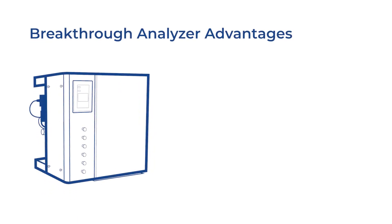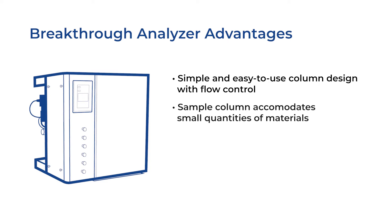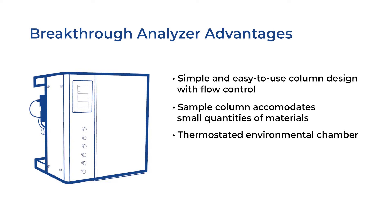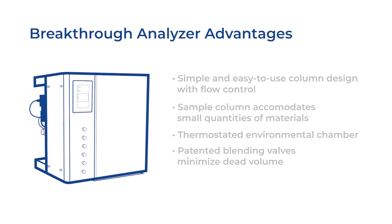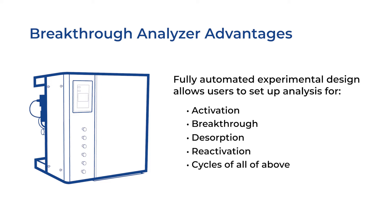This is especially important if your application involves the separation of hexanes or xylenes. The BTA offers several advantages. It has a simple column design with exceptional flow control, which enables multiple gases to be used with highly controlled blending. The sample column accommodates small quantities of material, which is ideal for R&D applications. A thermostated environmental chamber provides constant temperatures and prevents condensation of vapor streams. The patented blending valves provide advantages for gas mixing and minimization of system dead volume. The fully automated experimental design allows users to set up analyses for activation, breakthrough, desorption, and reactivation, as well as cycles of all of the above.